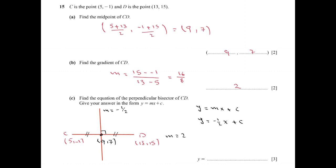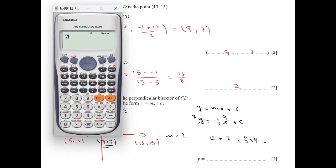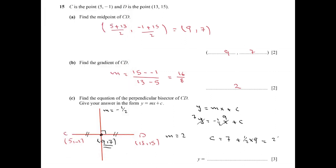To find the value of c, we use the point (9, 7): x = 9, y = 7. So c = 7 + ½ × 9 = 23/2. Therefore the equation of the perpendicular bisector is y = -½x + 23/2. Thank you.